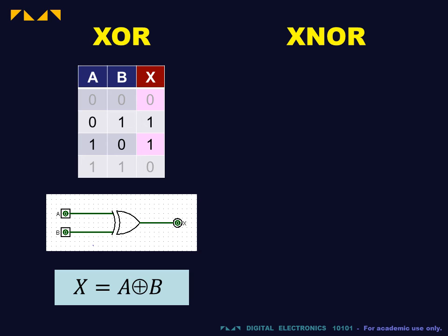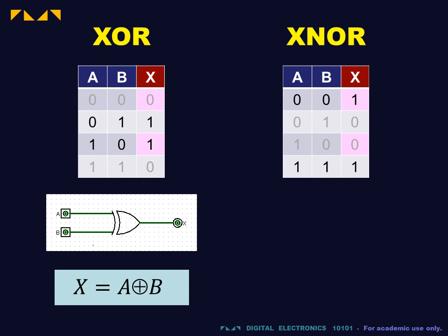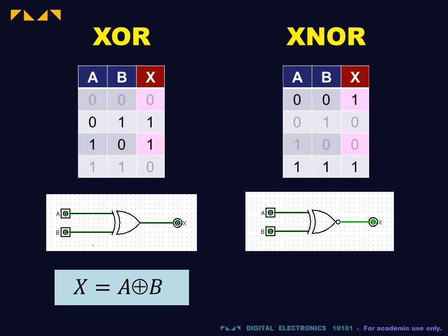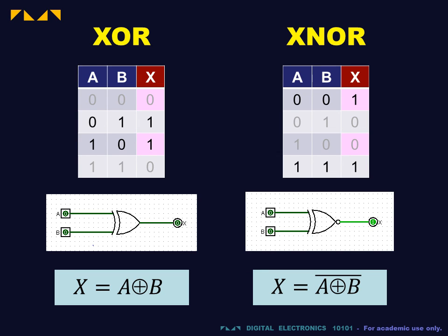The inverse of the XOR gate is the XNOR gate. Note that the XOR and XNOR gates can be used as input comparators. The output of the XOR gate is false if the inputs are the same, and true if they are different. The reverse is the case for the XNOR gate.